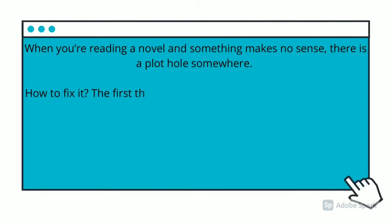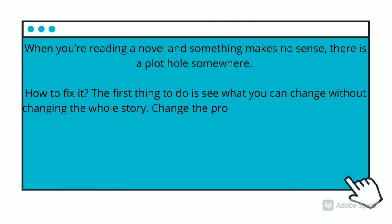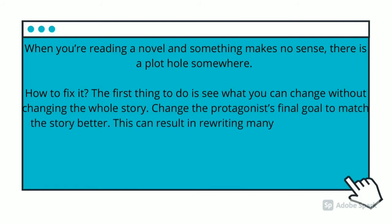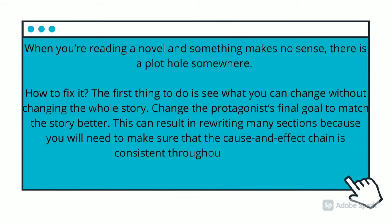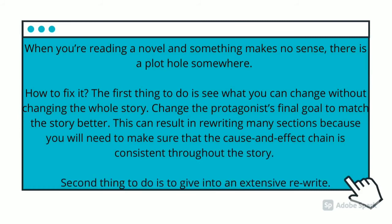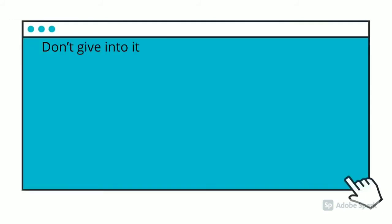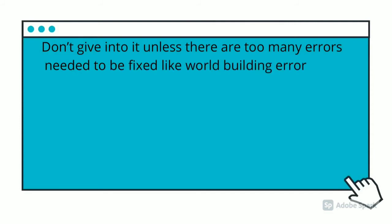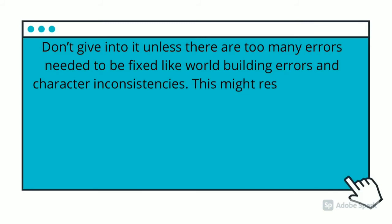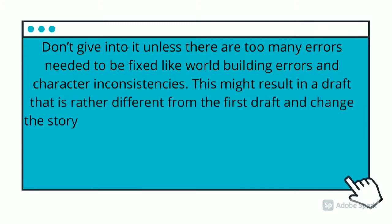The first thing you need to do is see what you can change without changing the whole story. Change the protagonist's goal to match the story better if needed — this can result in rewriting many sections to ensure the cause-and-effect chain remains consistent throughout the story. The second thing to do is consider an extensive rewrite. Don't give in to it unless there are too many errors needed to be fixed, such as world-related errors and plot inconsistencies.